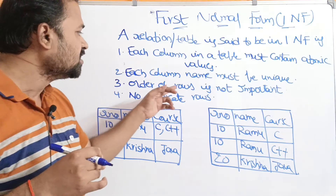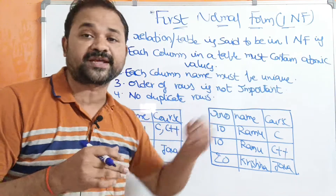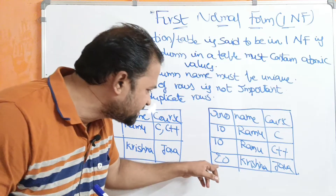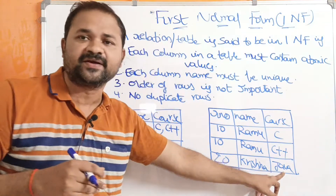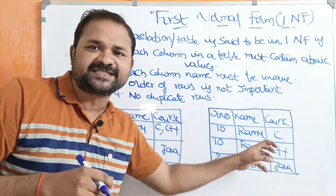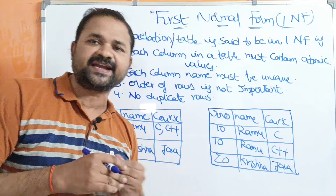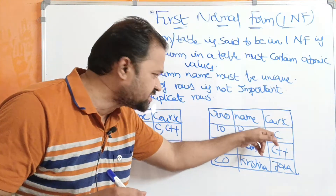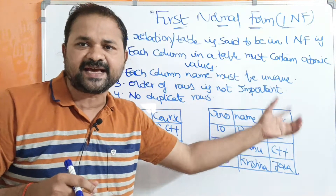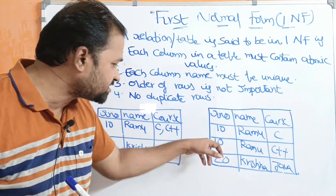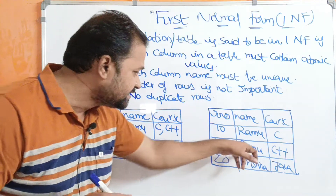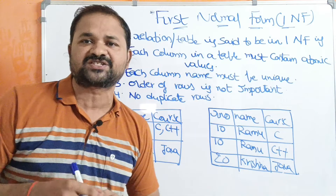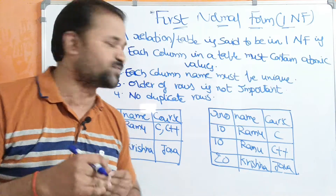The third condition is: the order of the rows is not important. Instead of placing a record as the third record, we can place it as the first or second. Or instead of placing a record as the first, we can place it as the second or third. There is no problem with row ordering.